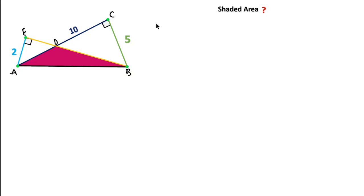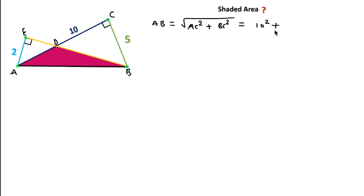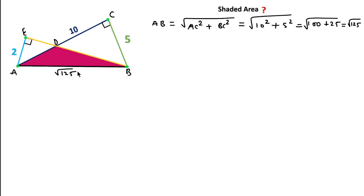AB is the hypotenuse for triangle ACB, so we can write AB equal to √(AC² + BC²). AC is 10 units and BC is 5 units, so AB = √(100 + 25) = √125. Also, we can write EB using triangle AEB.